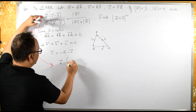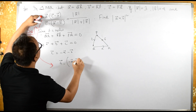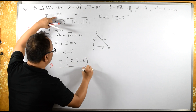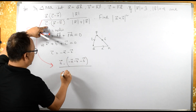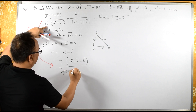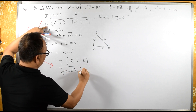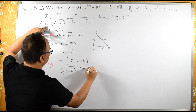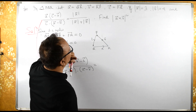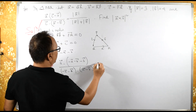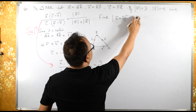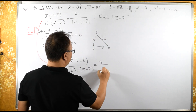So we compute A dot C, where C is minus A vector minus B vector. That gives us: minus A vector minus B vector, dotted with minus A minus B. The mod of A is given as 3, and mod of A plus mod of B is 3 plus 4 equals 7.